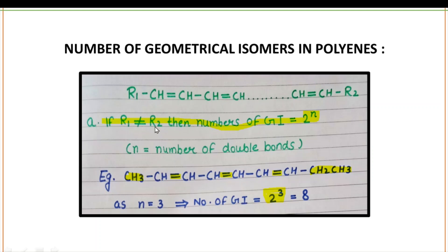Here is an example related to this formula. R1 is your CH₃ while R2 is your ethyl group CH₃CH₂, which means R1 is not equal to R2. So to calculate the number of geometrical isomers, the formula is 2 to the power N, where N is the number of double bonds. As you can see, the number of double bonds is 1, 2, and 3, so it is 2 to the power 3, which equals 8. The number of geometrical isomers in this chain is 8.